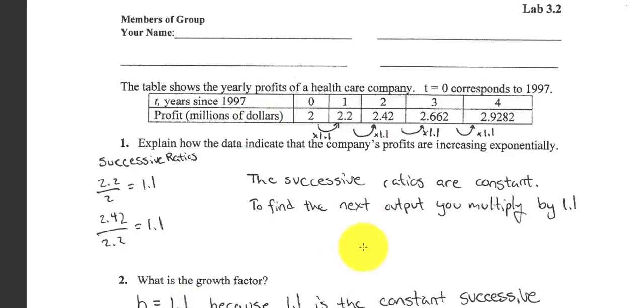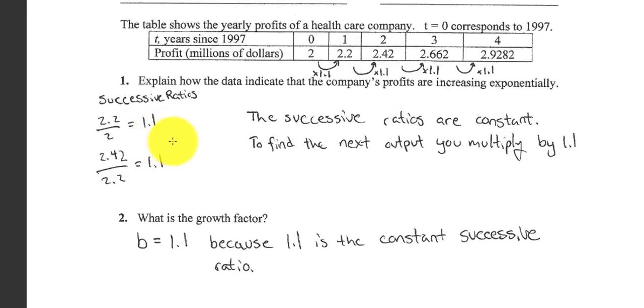Next, what is the growth or decay factor? Remember, the B. When we find our successive ratios, the value that we get, this 1.1, is our growth or decay factor. We'll call it growth if the value is bigger than 1. If the value is between 0 and 1, we'll call it decay. So we have 1.1, so we can say growth factor is 1.1.